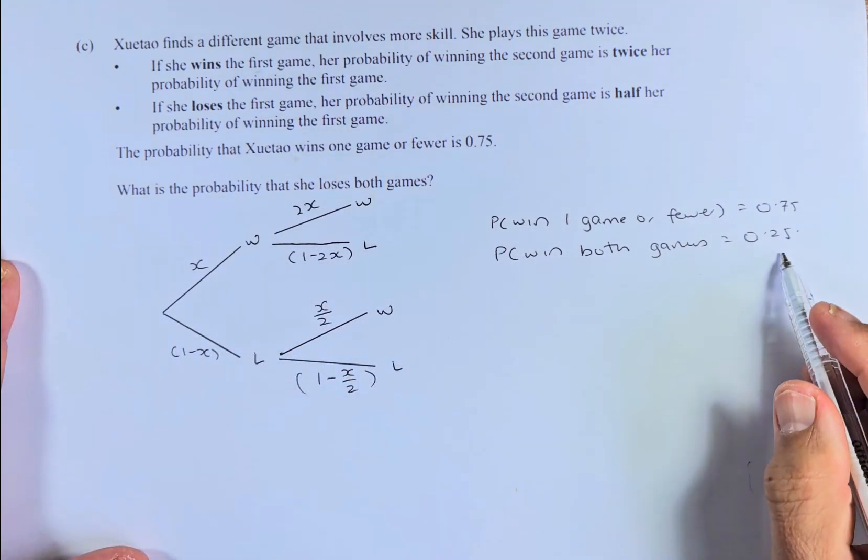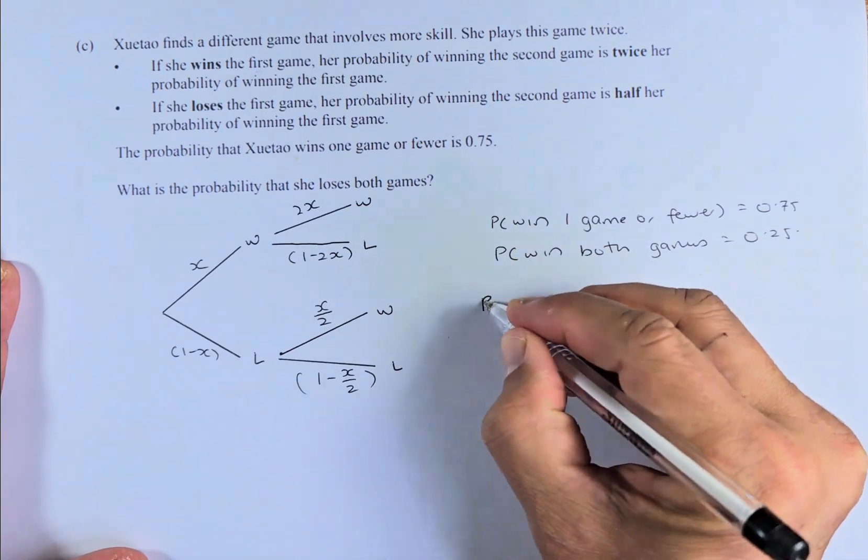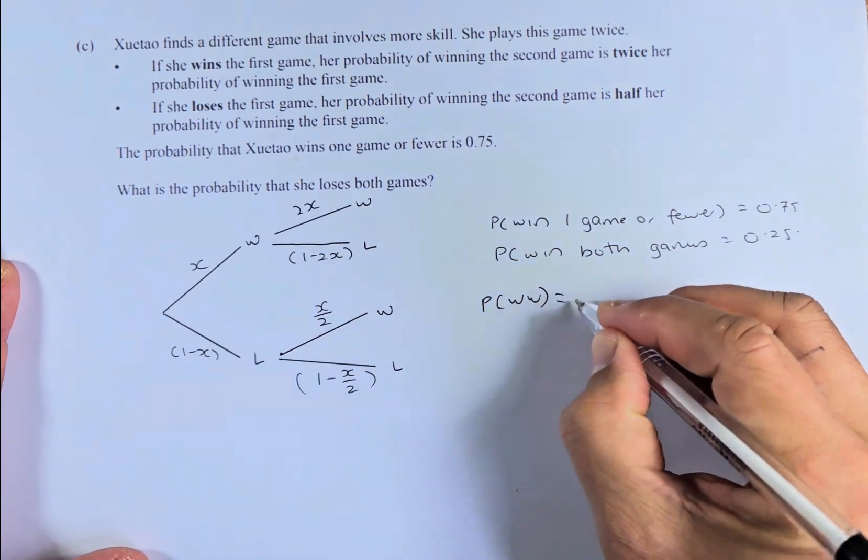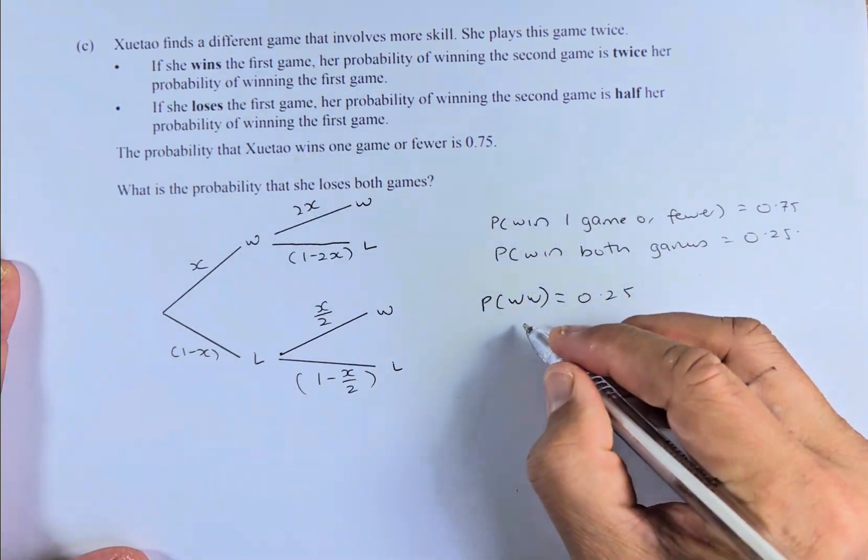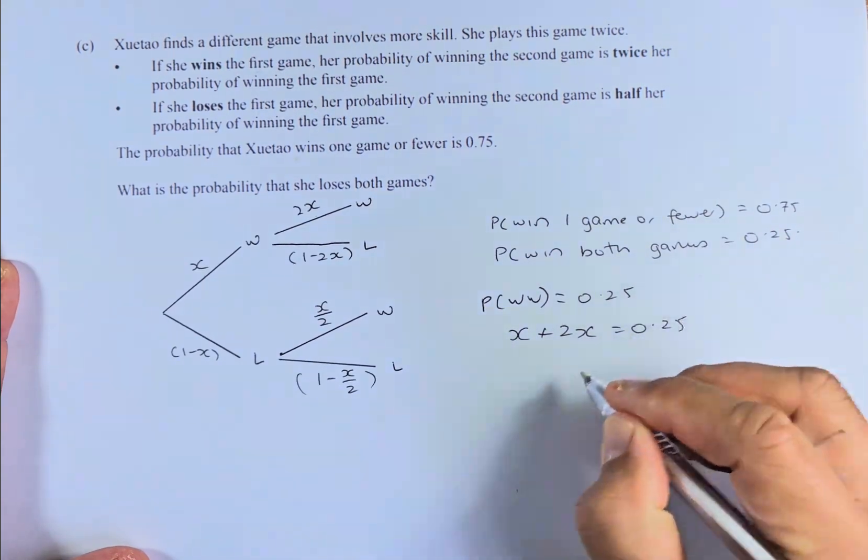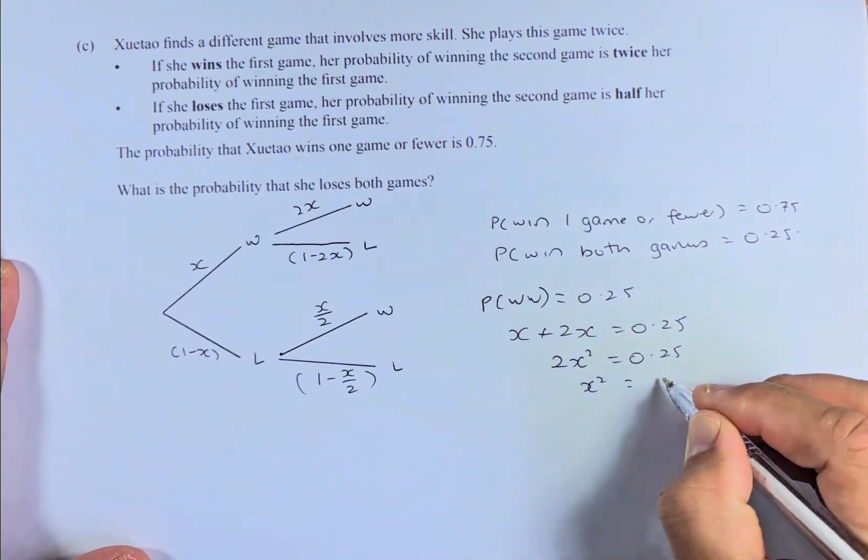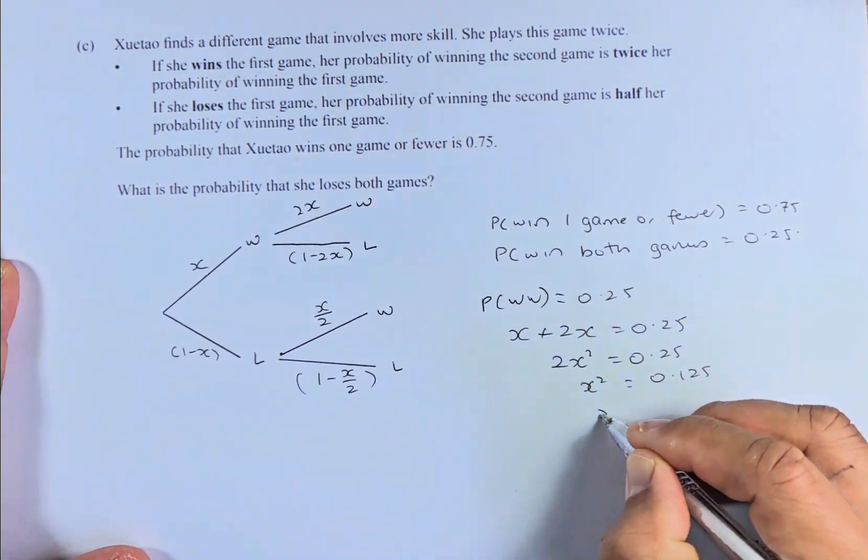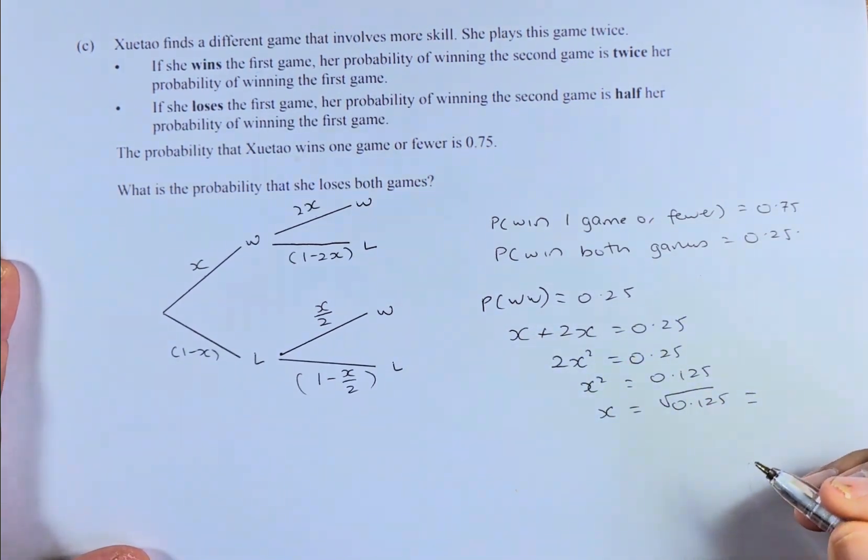The probability of winning both games is 0.25. In doing algebra, X times 2X equals 0.25. So 2X squared equals 0.25. X squared equals 0.125. X is the square root of 0.125. Put it in your calculator and it should give us the answer of 0.3536.